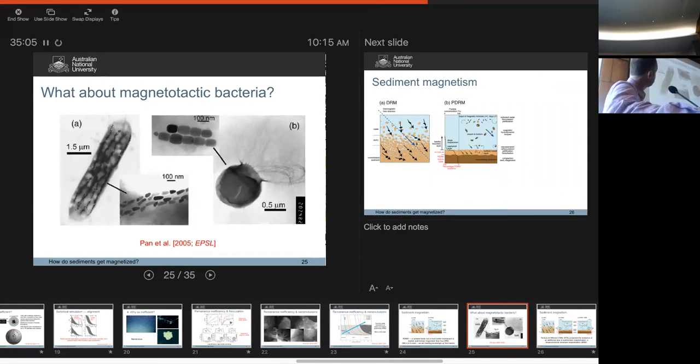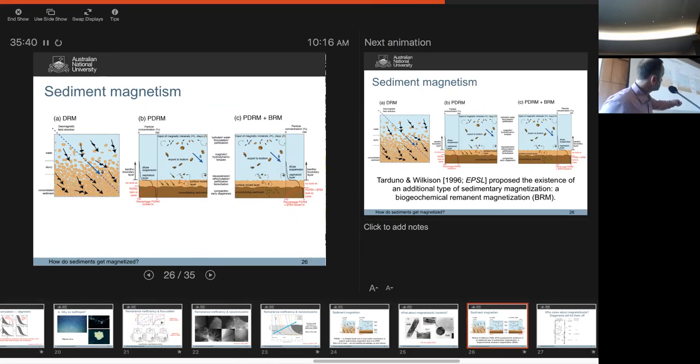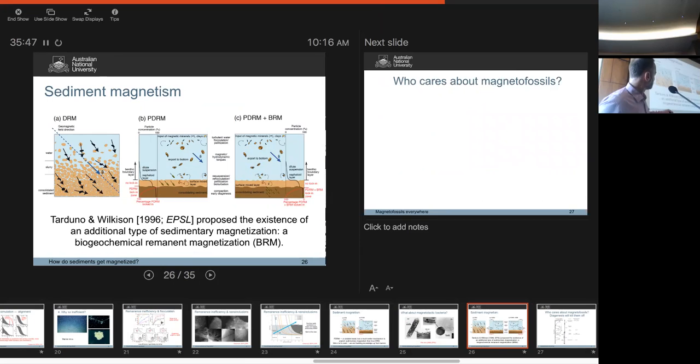What about magnetotactic bacteria? Our friends who like these things say that they're ubiquitous. And if they are, how do they affect sediment magnetization? In terms of a PDRM, I've shown a few magnetotactic bacteria here. The view is that if they live in the water column or in the surface mix layer, when they die, their particles are effectively like detrital particles. They're aligned passively by the field. So we don't need to worry about them too much. But if they live within the historic sediment layer, then they can give rise to another type of magnetization that's been called a biogeochemical remanent magnetization, which is a term coined by John Tarduno. It's never really been demonstrated one way or the other how common this is.